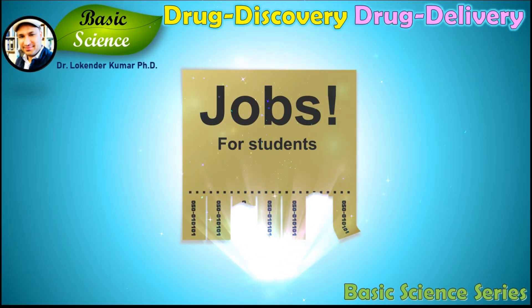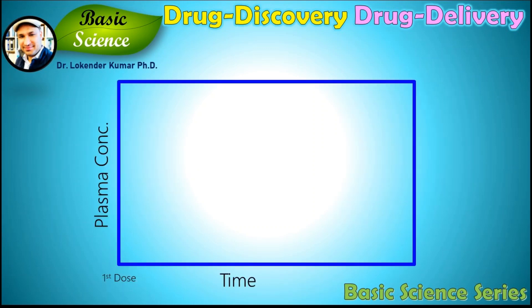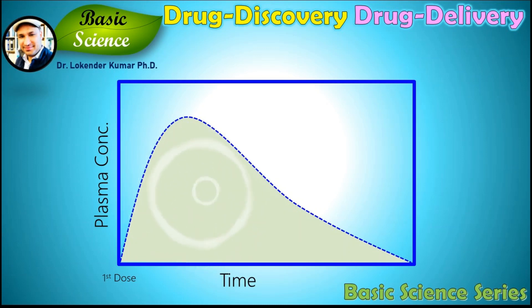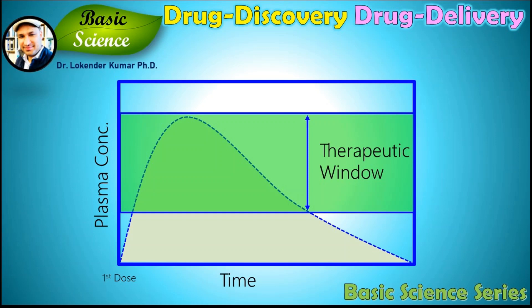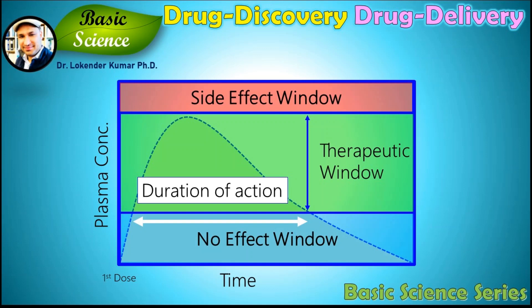Before discussing various approaches of drug delivery, we need to understand what happens to a drug when it enters the human body. When a drug enters the human body after its first dose, the concentration of drug in plasma increases and after reaching a maximum concentration, it declines. In this plot, there is an optimum concentration called the therapeutic window of the drug. Above that is the side effect window, below that is the no effect window, and there is a particular time called the duration of action where the drug is effective in treating the disease.